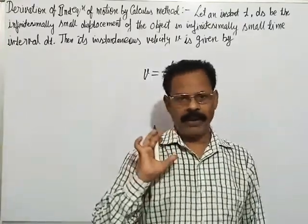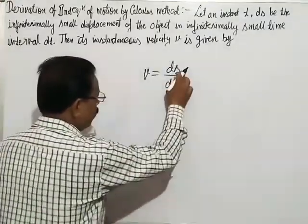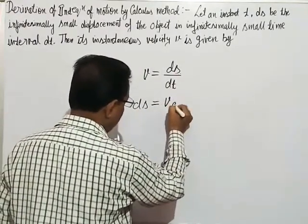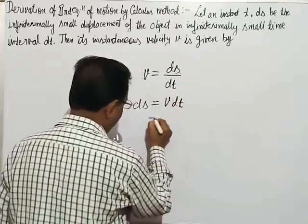Then ds = v dt. Now substitute the value of v using the formula for v.